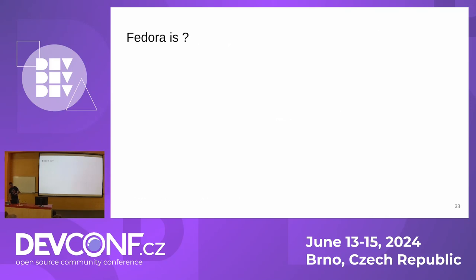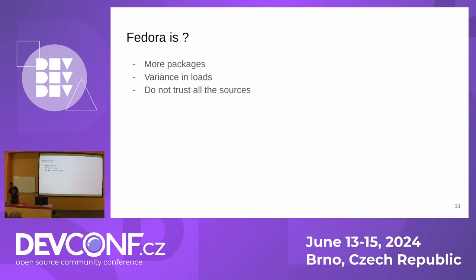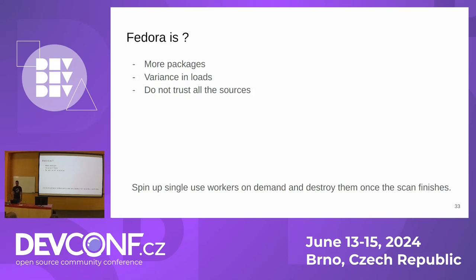How is Fedora different from RHEL for scanning? Fedora contains close to 10 times more packages. There may be variance in loads on the service depending on community activity. And you cannot trust all sources — there are hostile elements in every community that may try to compromise workers and influence results. The solution is to spin up single-use workers on demand, keep the workers disposable and used for only one scan, and destroy the worker when the scan finishes.